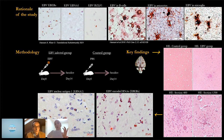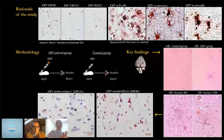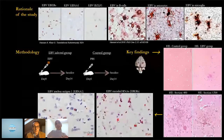However, the presence of infected cells did not correlate with the presence of the aggregates. Animals that did not develop aggregates still had infected cells in the brain.